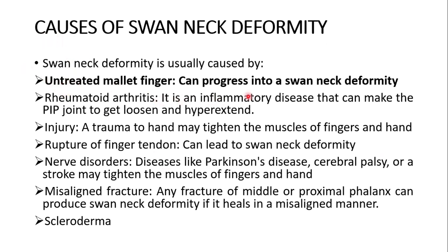Untreated mallet finger can progress into a swan neck deformity. Rheumatoid arthritis is an inflammatory disease that can cause the proximal interphalangeal joint to loosen and hyperextend. Trauma to the hand may tighten the muscles of the fingers. Another cause is rupture of a finger tendon, which can lead to swan neck deformity. Nerve disorders such as Parkinson's disease or cerebral palsy may also tighten the muscles of the fingers.